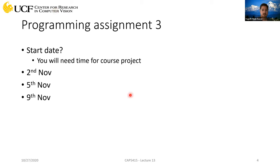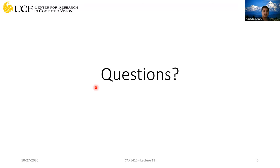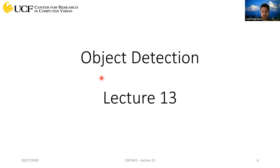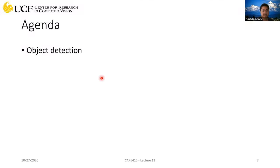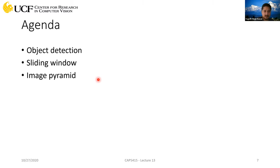Today we are going to look into object detection. We have already seen how we can do classification. The agenda today will be: we'll see what object detection is, we'll go through a very simple approach called sliding window, and we'll look into a special technique called image pyramid, which we have seen earlier when doing key point extraction and corner detection.